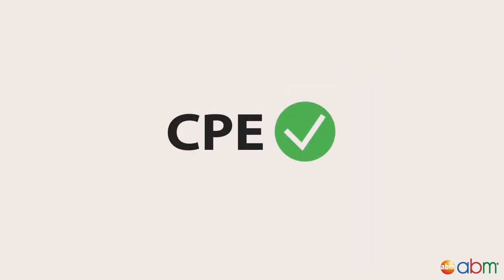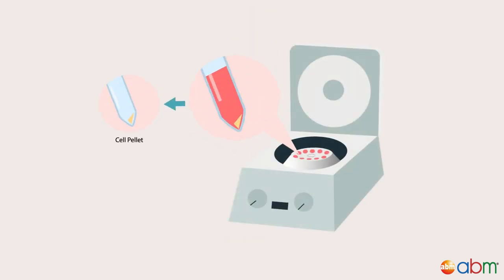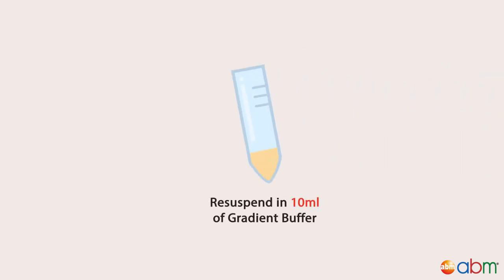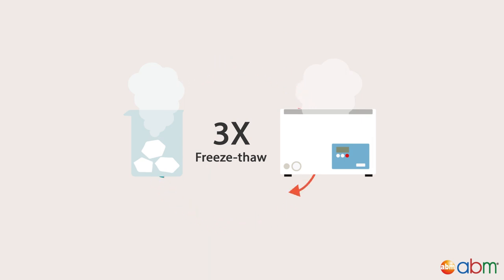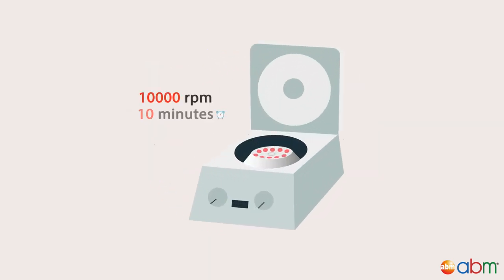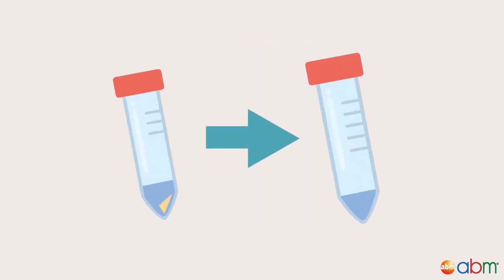After complete CPE is achieved, harvest the cells and media in a centrifuge bottle. Centrifuge the cells and media at 7,500 rpm for 10 minutes to pellet the cells. Resuspend cell pellets in 10 ml of gradient buffer and perform 3 cycles of freeze-thaw. Spin at 10,000 rpm for 10 minutes to clarify the supernatant. Your supernatant is now ready for virus purification.